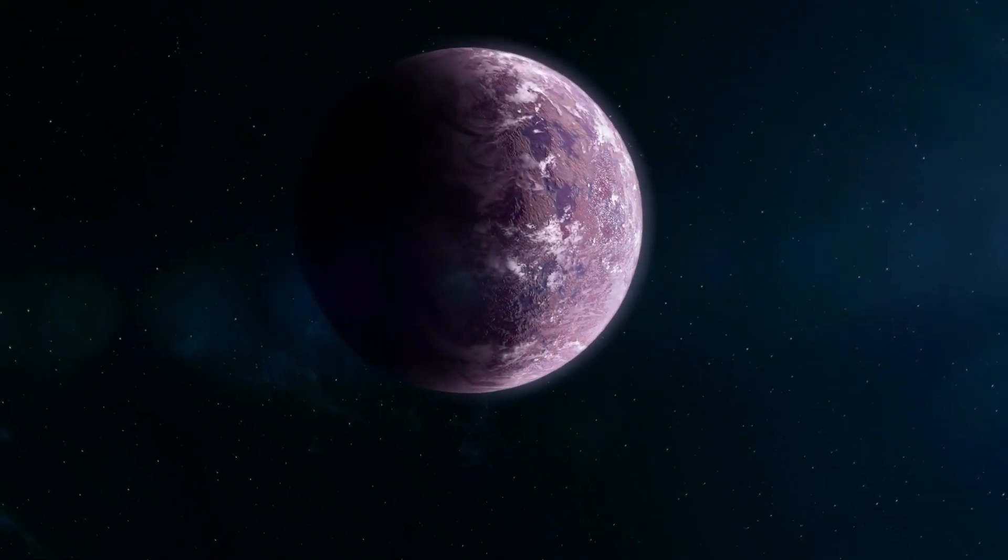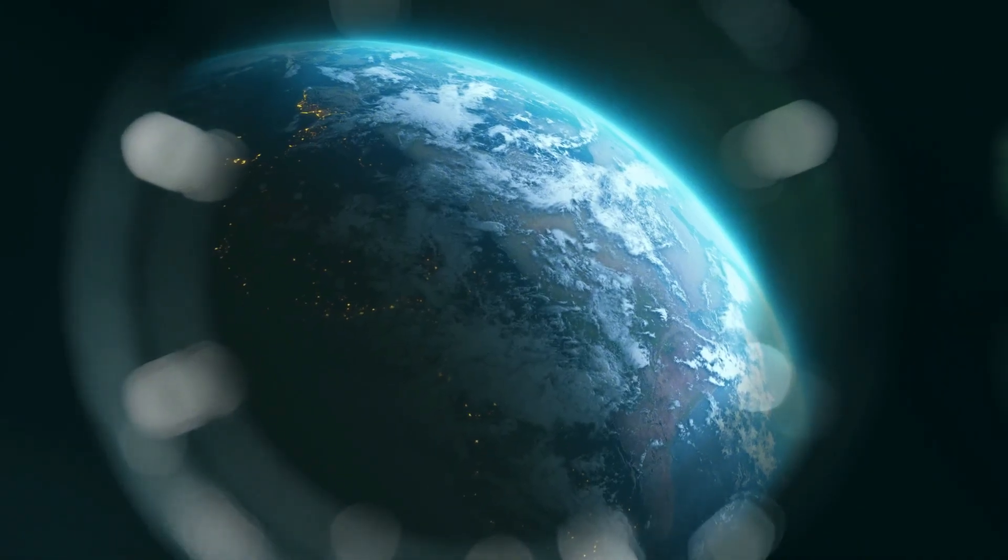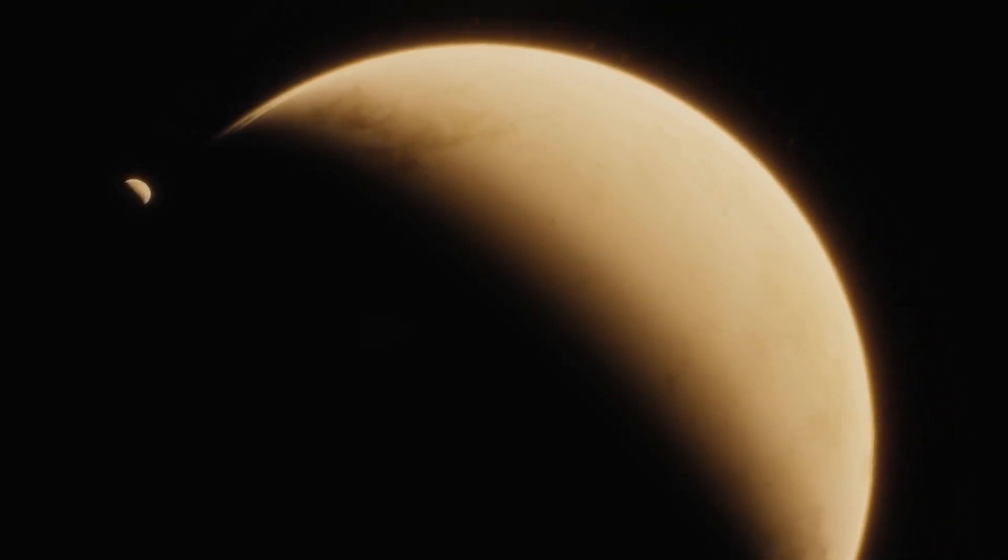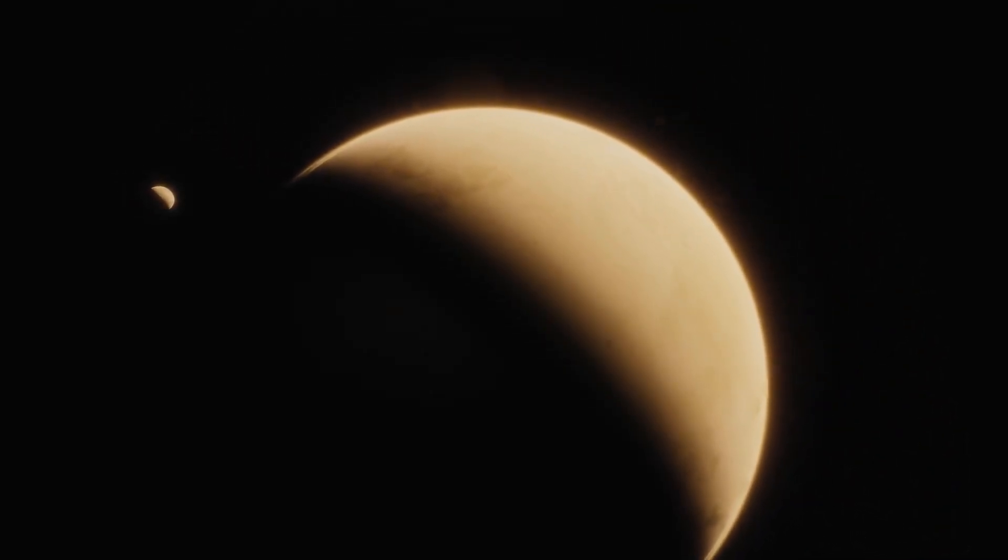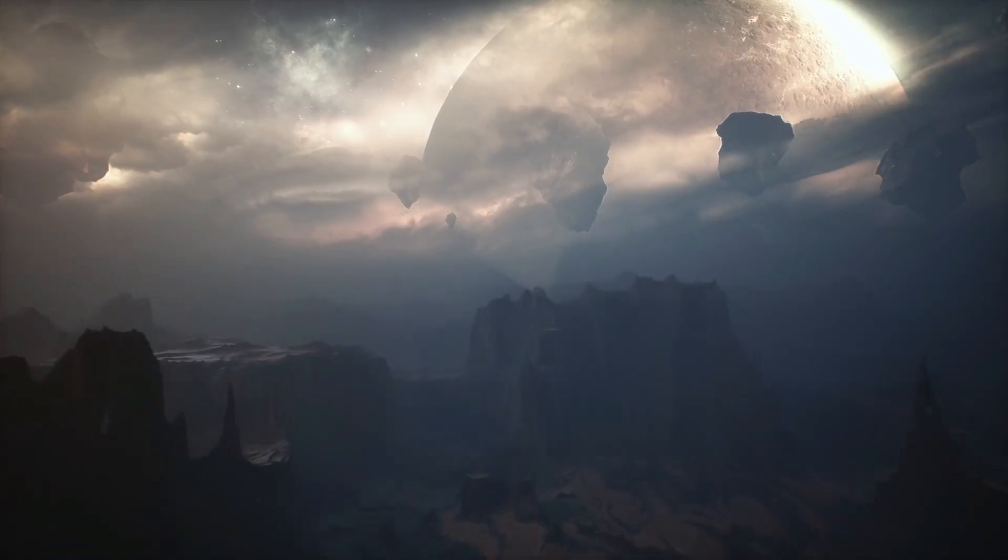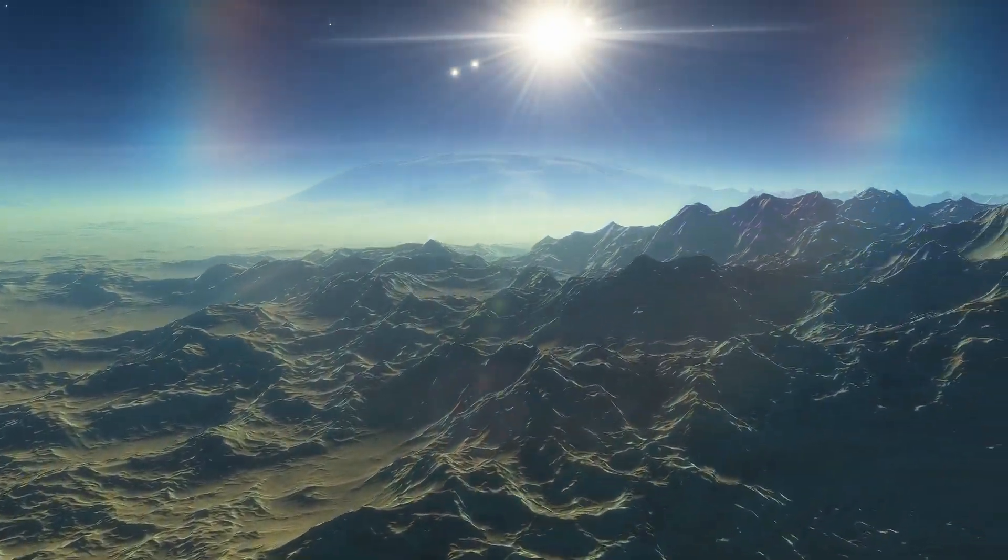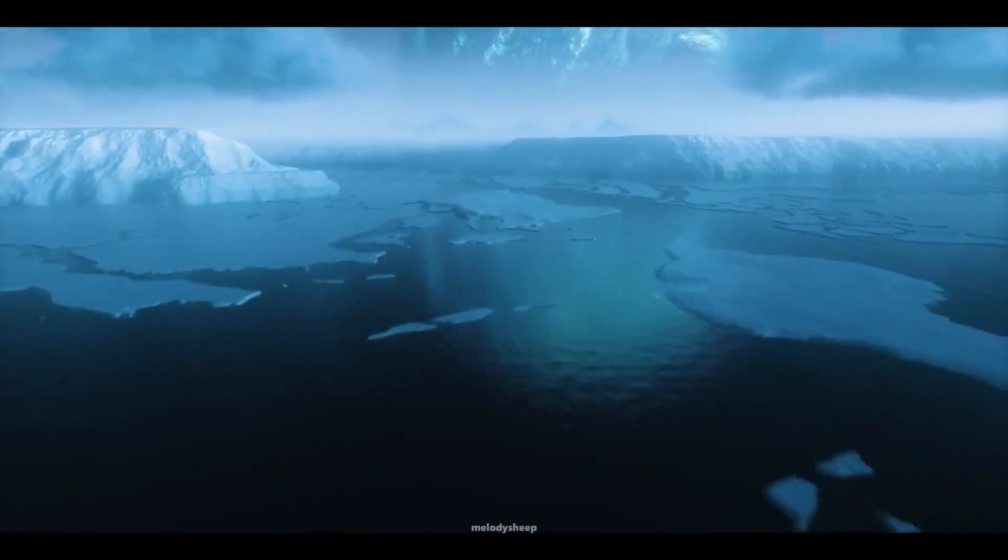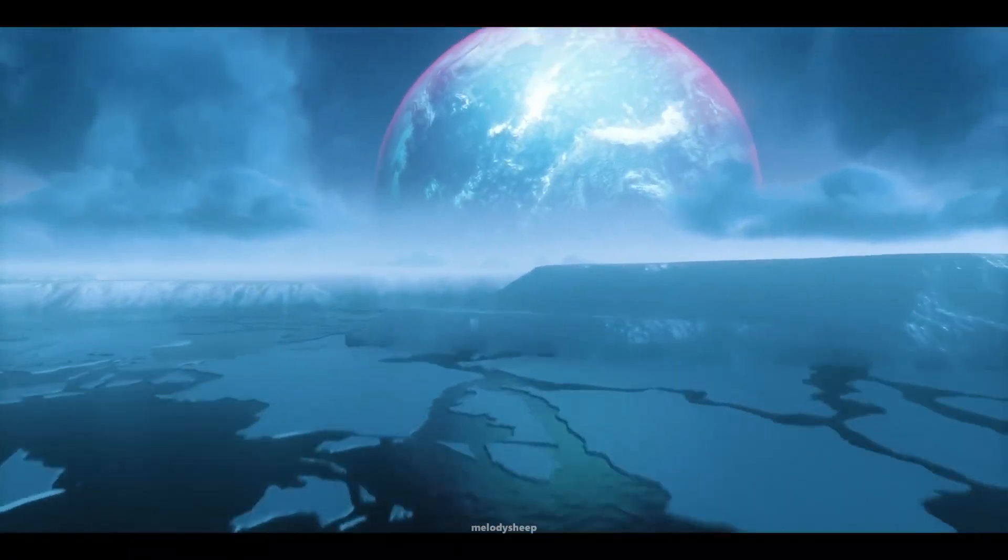Let's talk Proxima Centauri b specifics. We're talking size, composition, and all that good stuff. It's a bit bigger than Earth, with a radius of 1.03 times and a mass of 1.07. But what gets me excited is its potential for an atmosphere. Can you imagine what kind of weather patterns might be swirling around there?